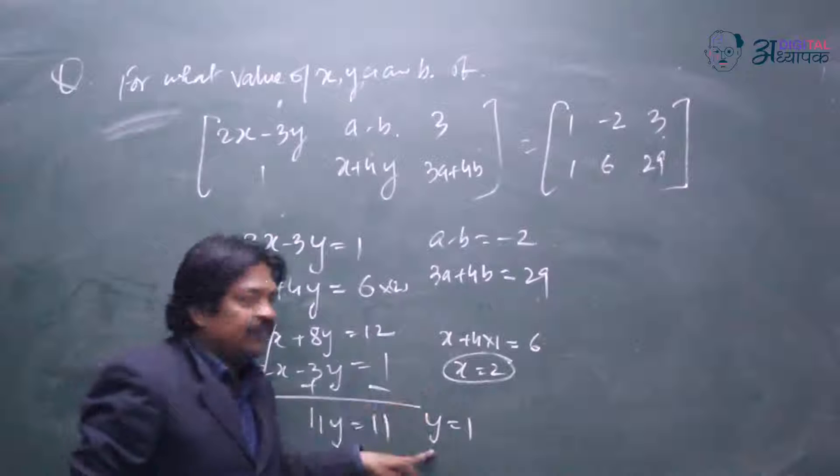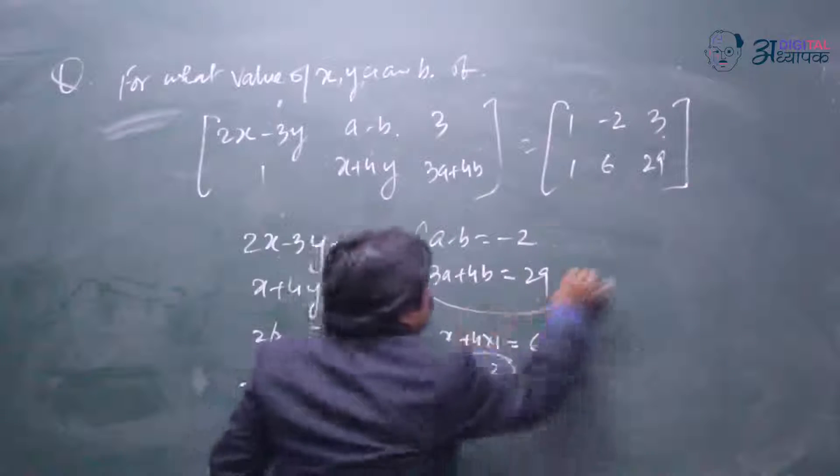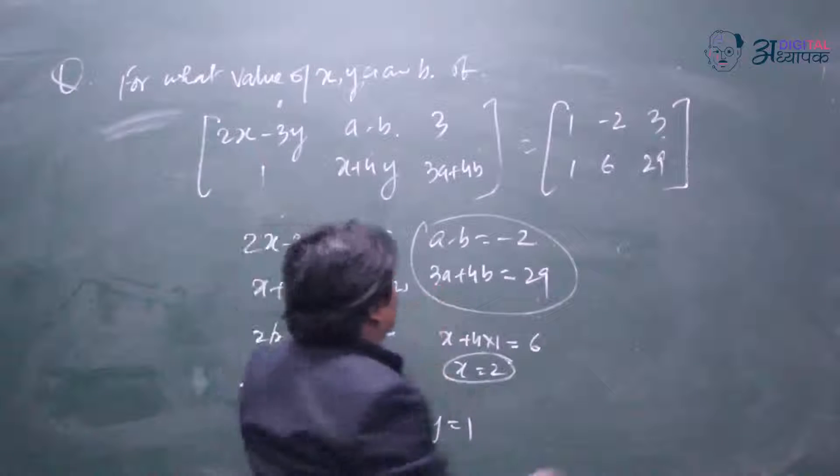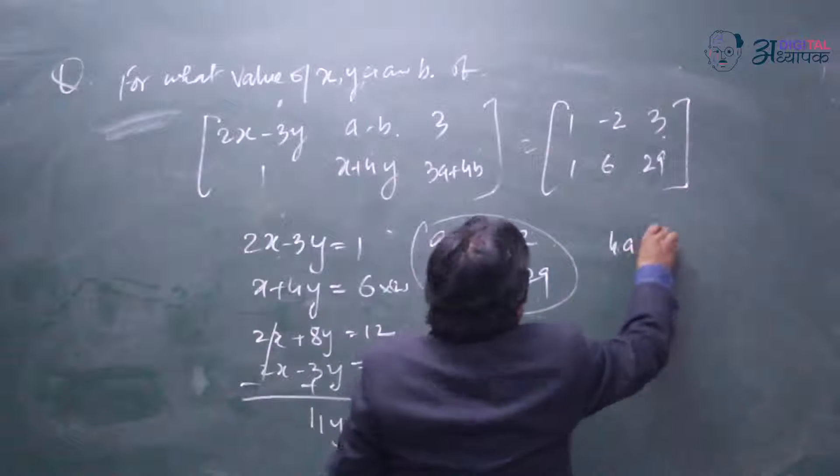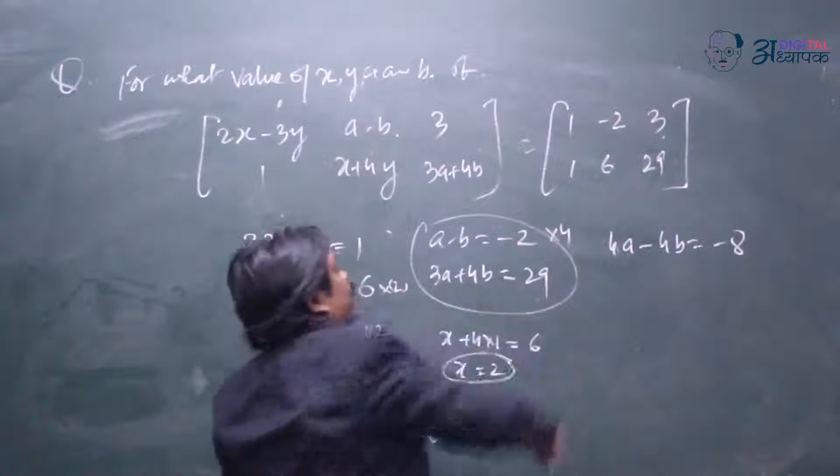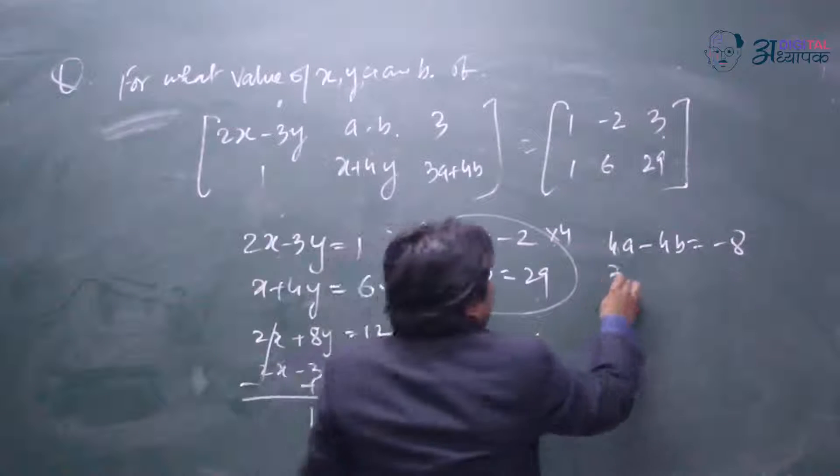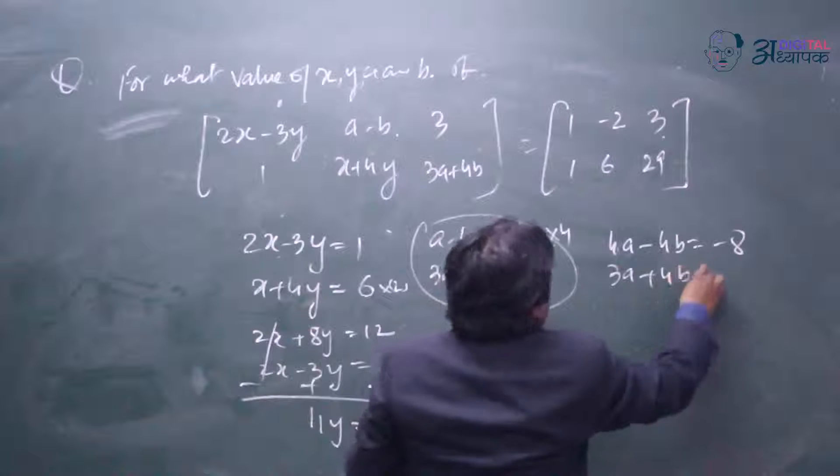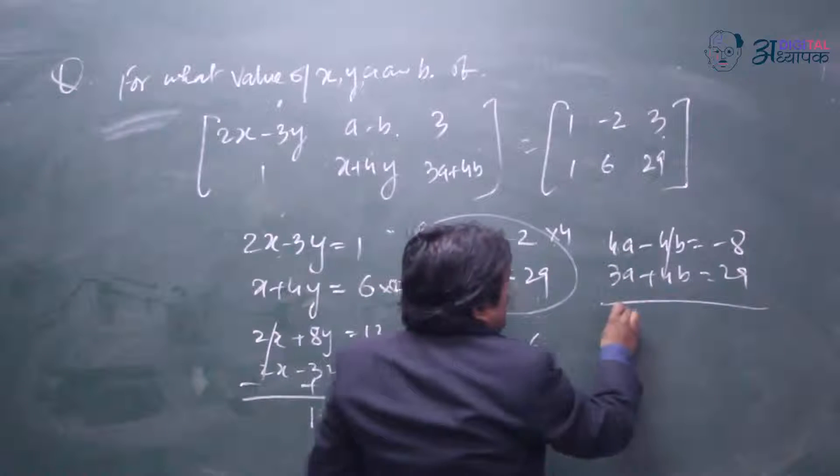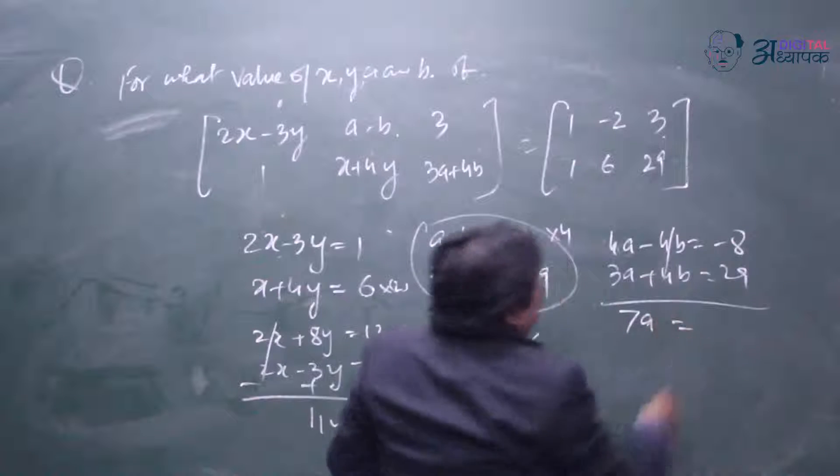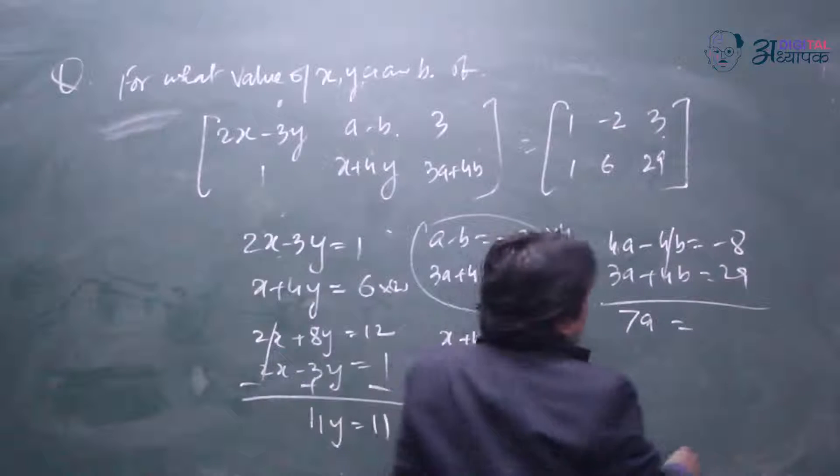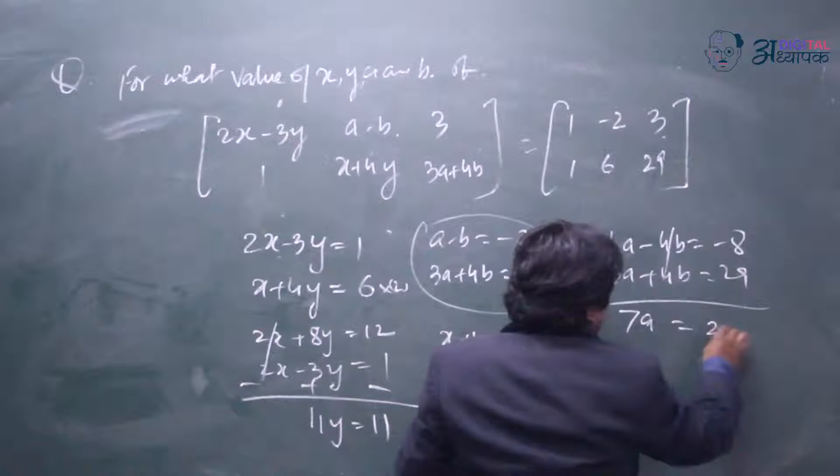The value of x and y we get. Similarly we have to solve this equation for a. We have to multiply the equation by 4. Then 4a minus 4b equal to minus 8. And then we have 3a plus 4b equal to 29. We have to add them. 4 plus 3, we get 7a. And 29 minus 8, so 29 minus 8 we get 21.